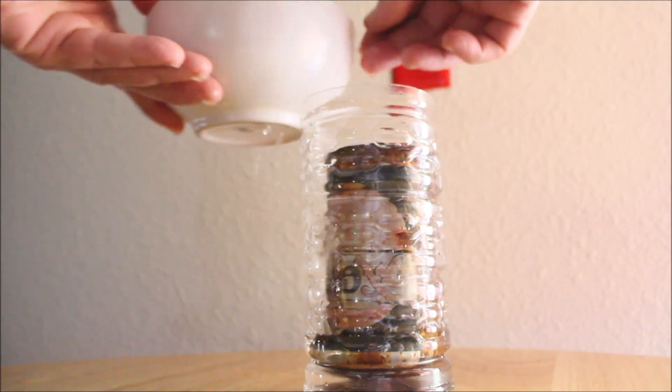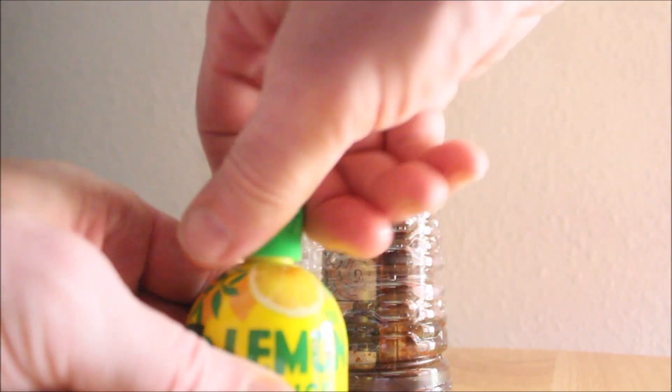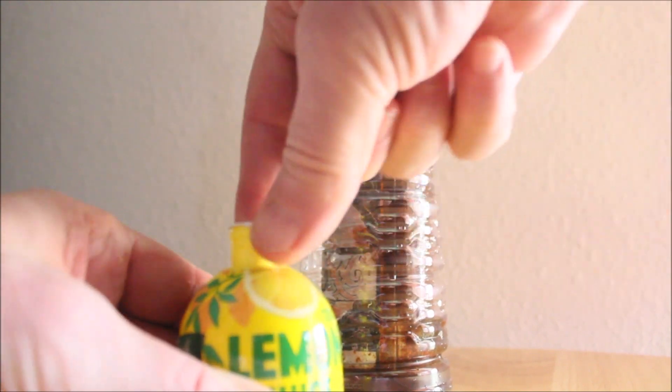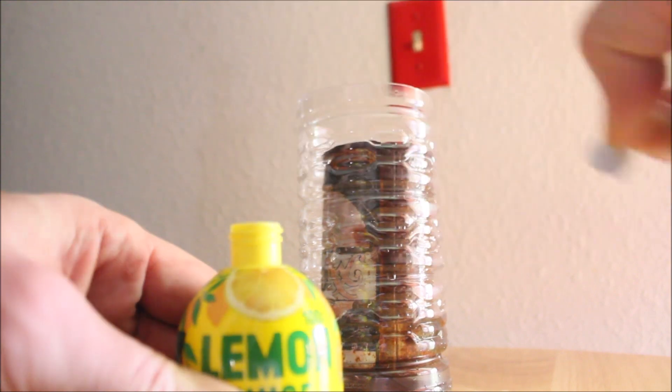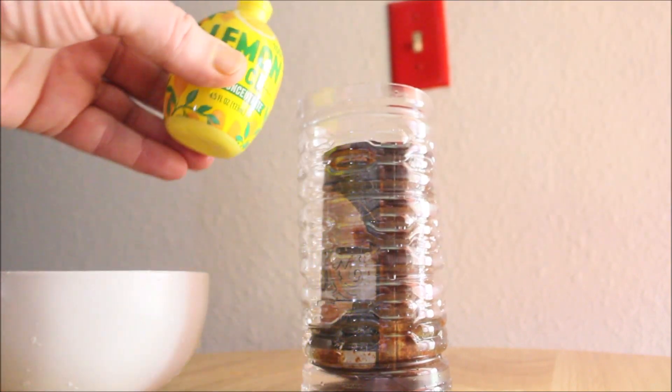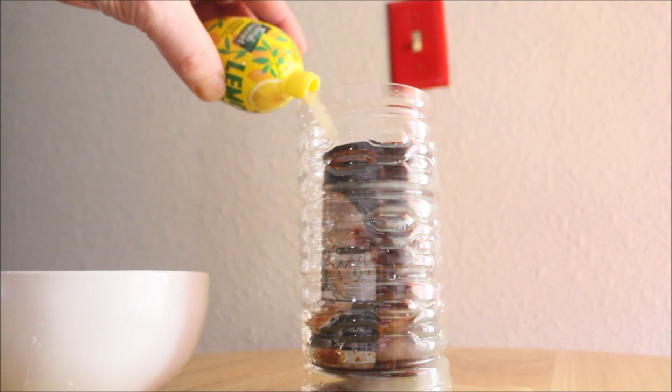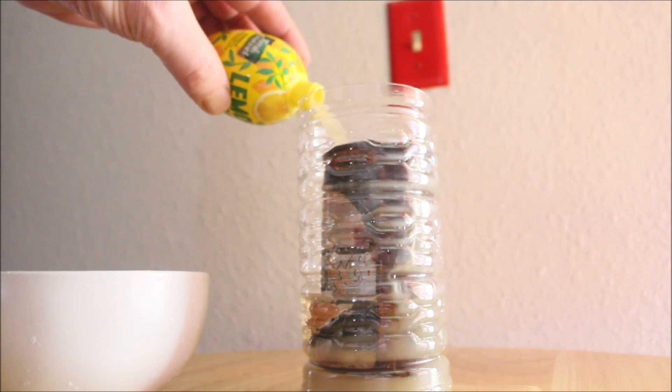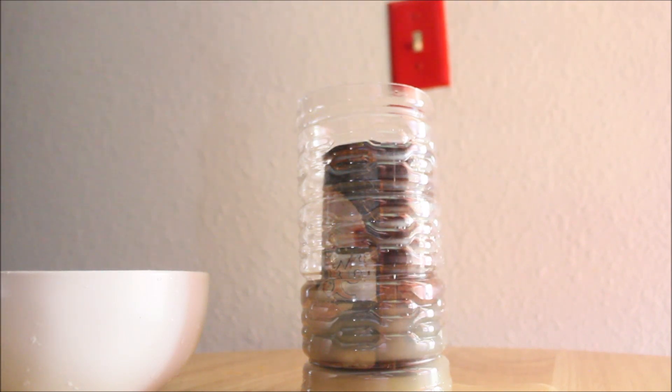And now we're going to add some lemon juice. We're gonna plan to let this sit for 24 hours. You can see it beginning to interact with the rust. The citric acid should be able to minimize the rust adhesion to the can. All right, there we go.